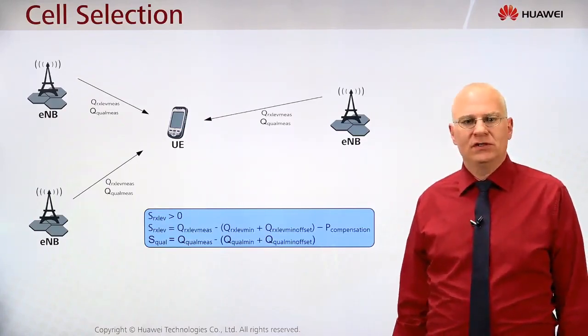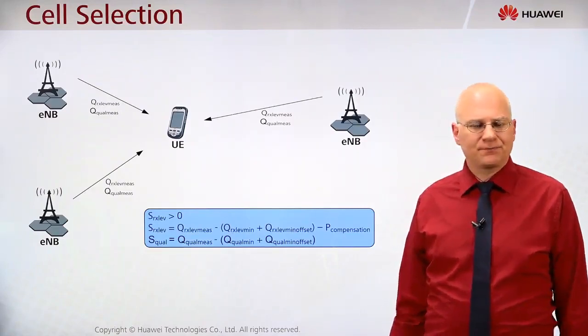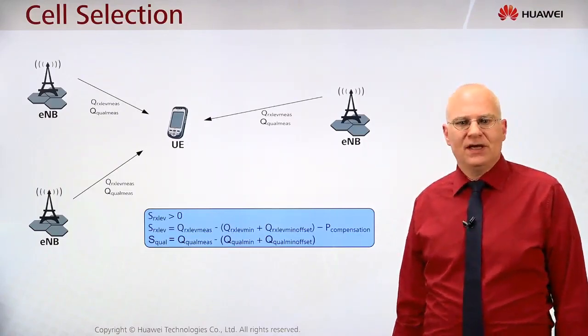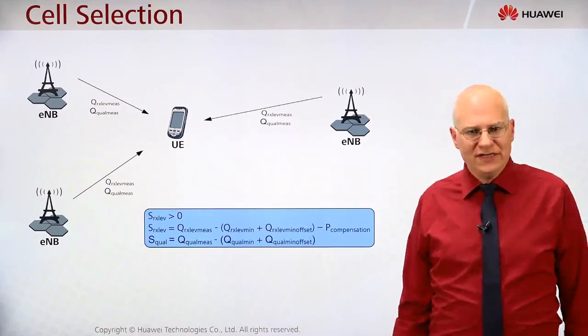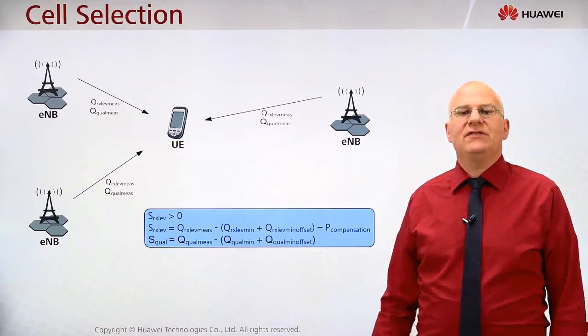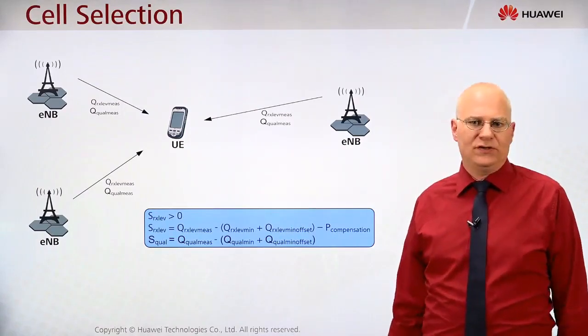But if there may be some lower power class mobile, like a mobile which only has a maximum power of 20 dBm, then there will be an offset given of 3 dBm. So the level has to be 3 dB higher than for a high power user equipment.